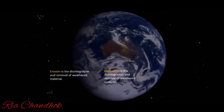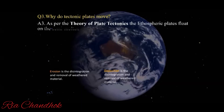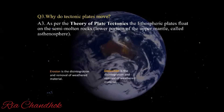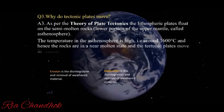Next: why do tectonic plates move? As per the theory of plate tectonics, the lithospheric plates float on semi-molten rocks. The temperature in the asthenosphere is very high — around 1600 degrees Celsius — and hence the rocks are in a near-molten state. Due to this high temperature and semi-liquid state of the rocks, the tectonic plates move in a viscous way.